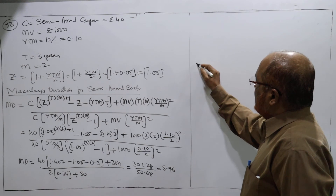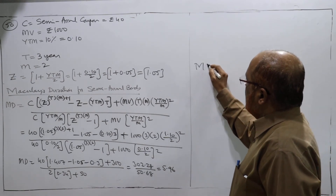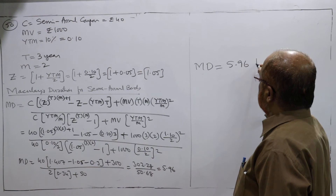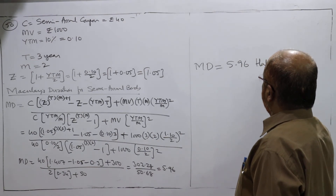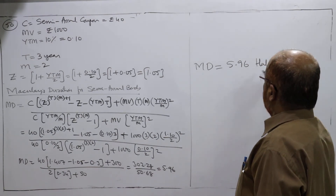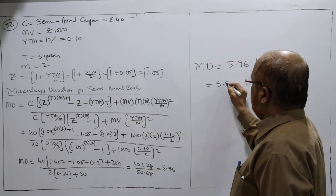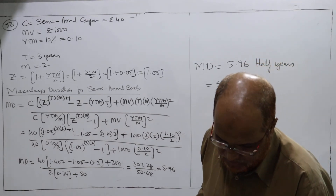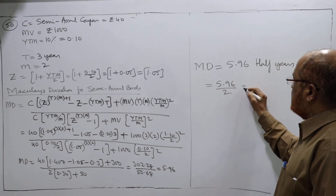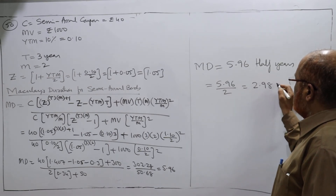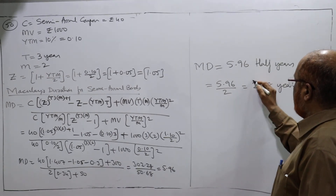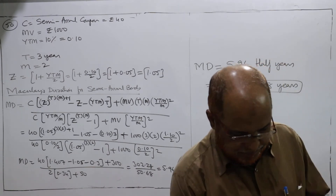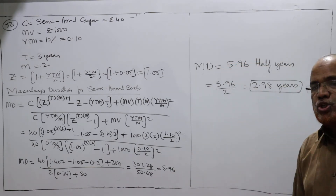So Macaulay's duration equals 5.96 half-years. That equals 5.96 divided by 2, which is 2.98 years. So Macaulay's duration is 2.98 years.